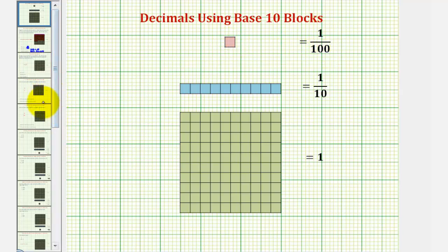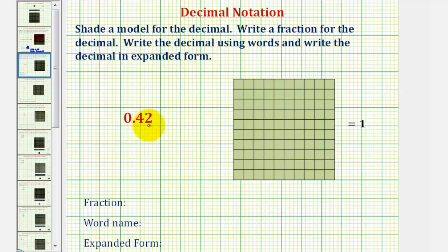So going back to our example, because our decimal is 42 hundredths and our ten by ten grid, or our flat, partitions or cuts one whole into one hundred equal pieces, we want to shade 42 of these small pieces.